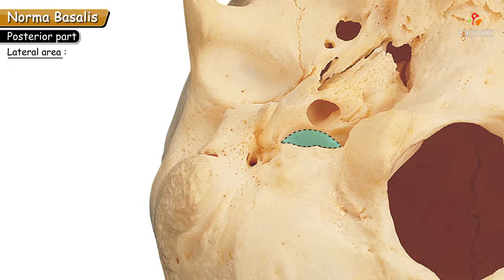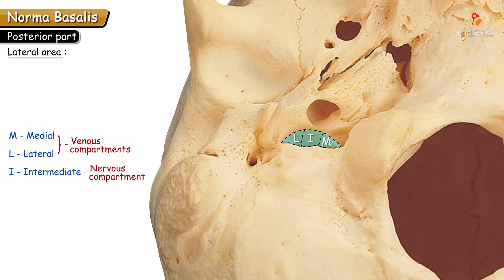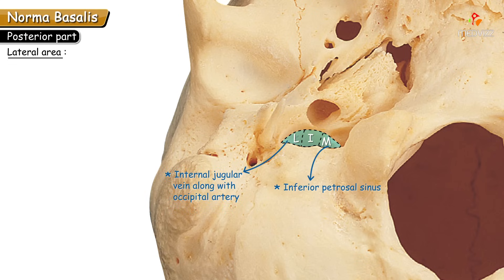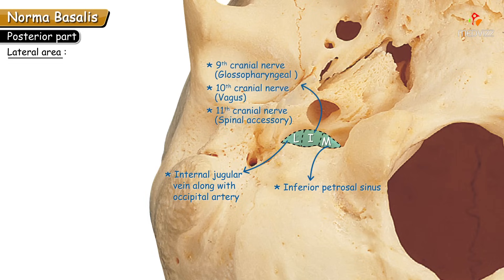To remember the contents of the jugular foramen, divide it into three parts: medial, intermediate, and lateral. The medial and lateral parts are venous compartments; the intermediate is the nervous compartment. The medial compartment transmits the inferior petrosal sinus. The lateral compartment transmits the internal jugular vein (continuation of the sigmoid sinus) along with the occipital artery. The intermediate compartment transmits the 9th (glossopharyngeal), 10th (vagus), and 11th (spinal accessory) cranial nerves.